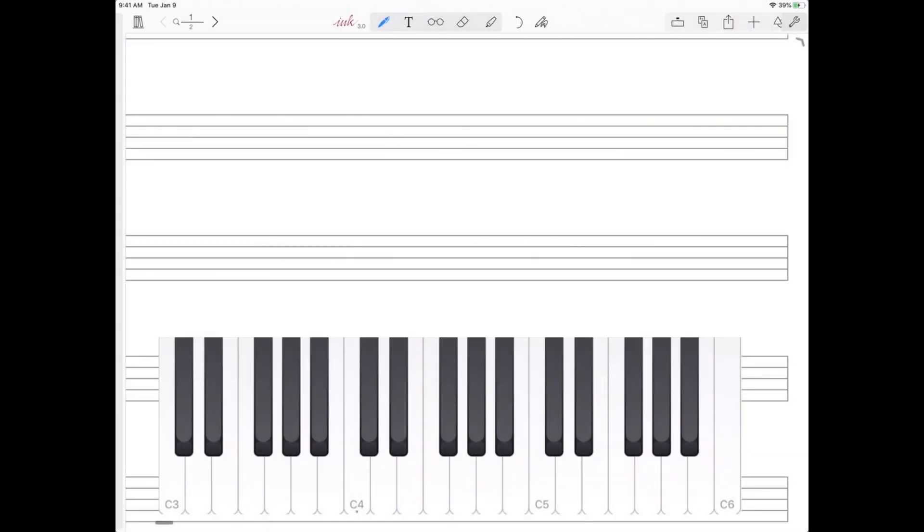In our last video we learned that the order of sharps is F, C, G, D, A, E, and B.